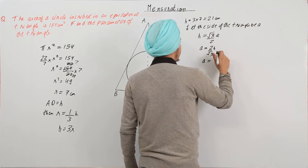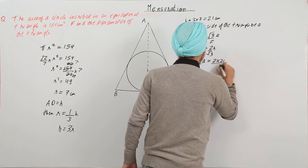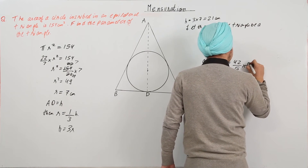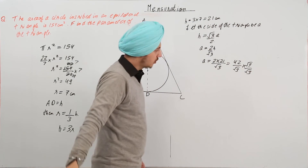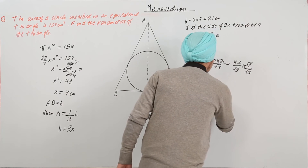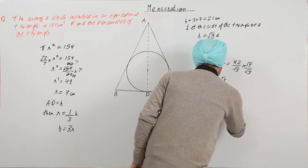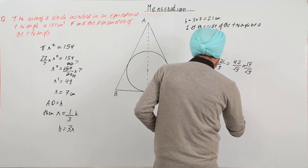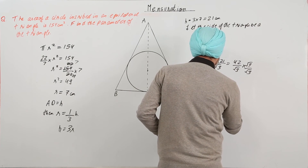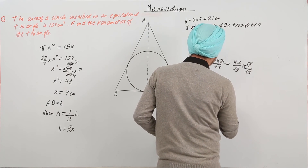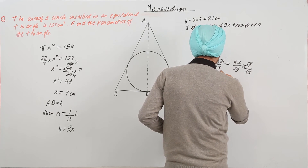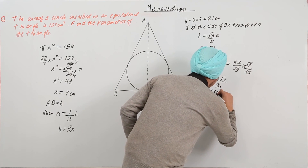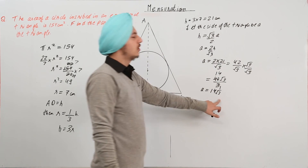Substituting h = 21, we get A = 2 × 21 / √3 = 42 / √3. Multiplying and dividing by √3 gives 42√3 / 3. Simplifying, 42 divides by 3 to give 14, so A = 14√3 cm. This is one side of the equilateral triangle.